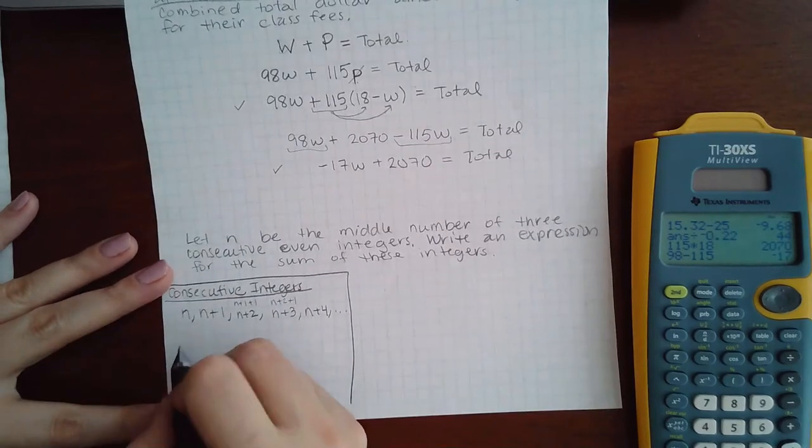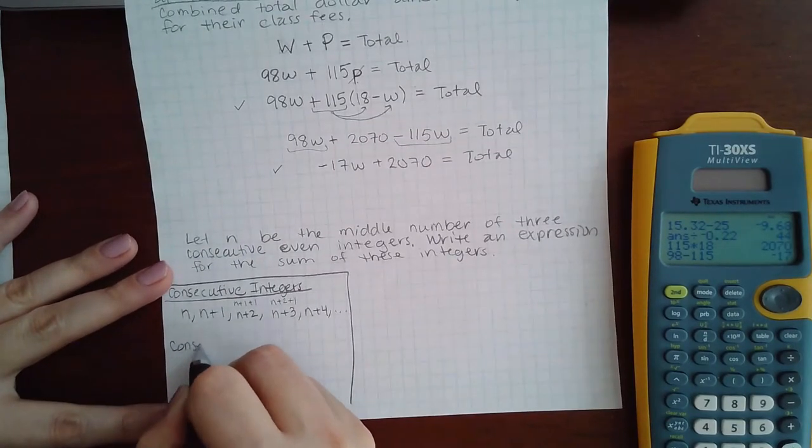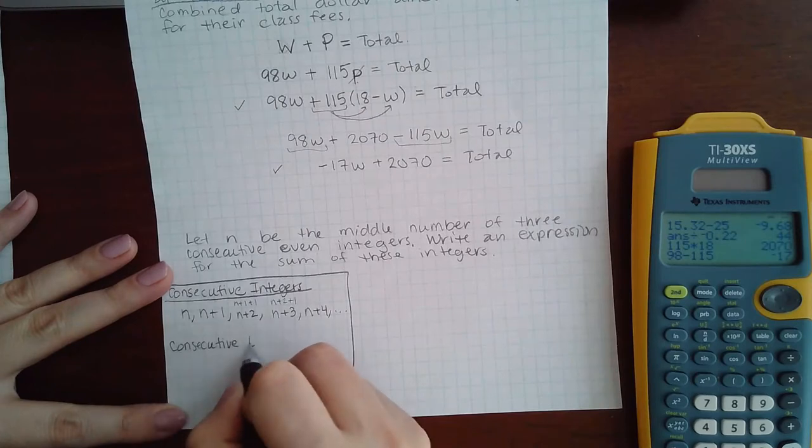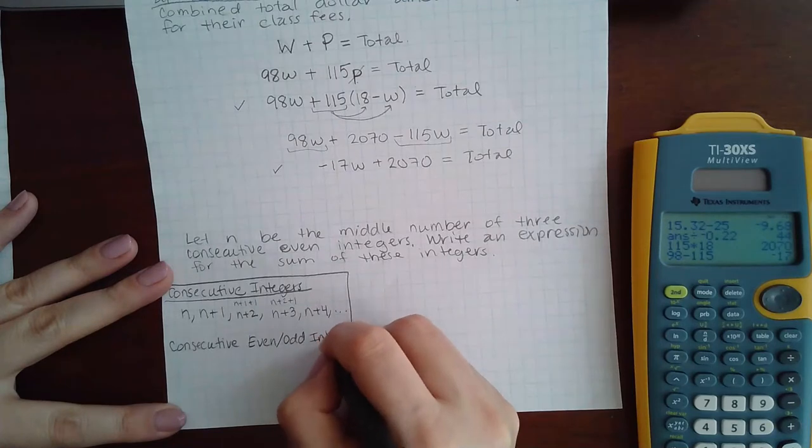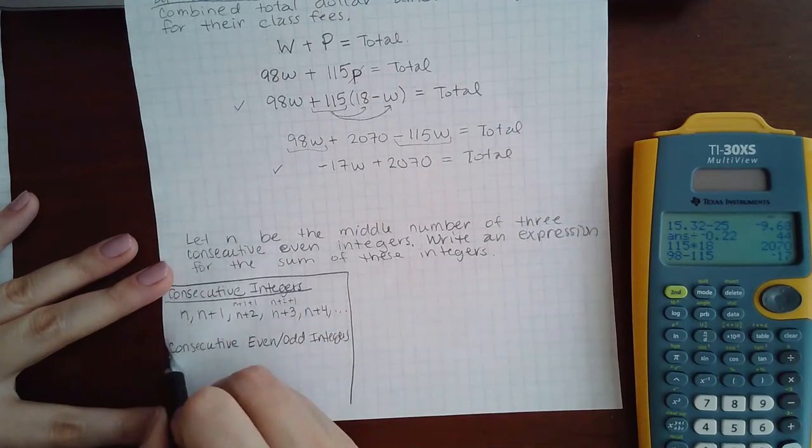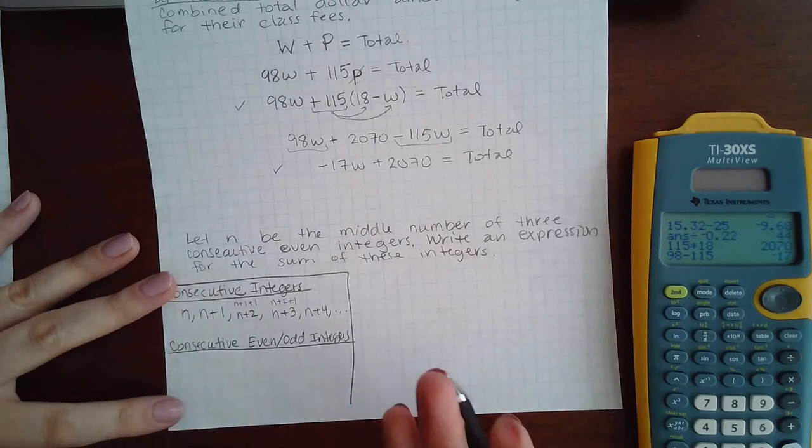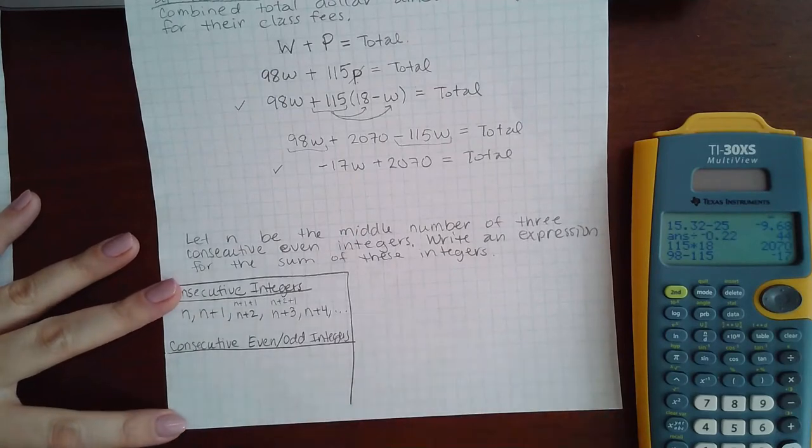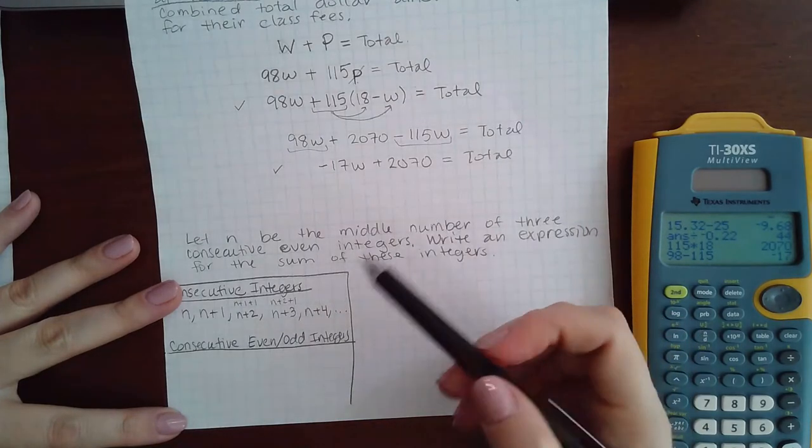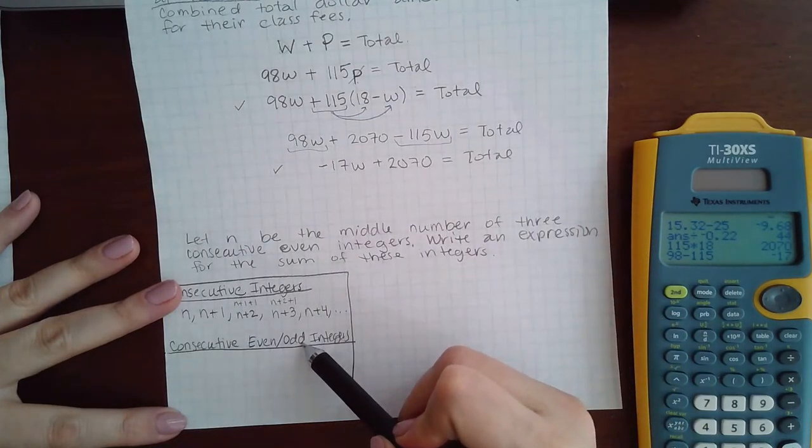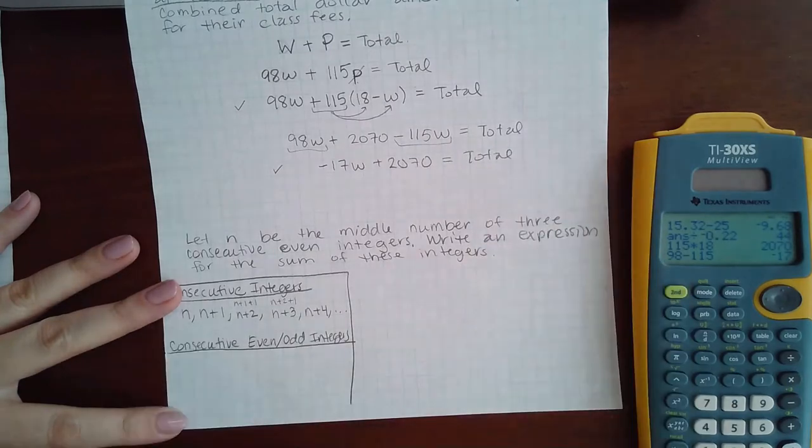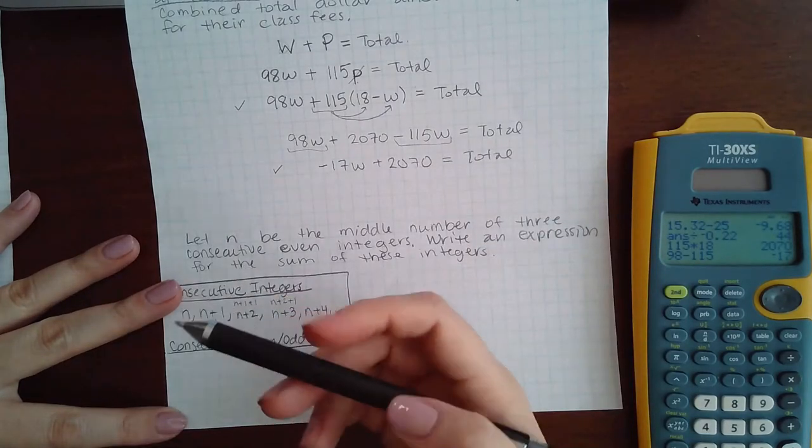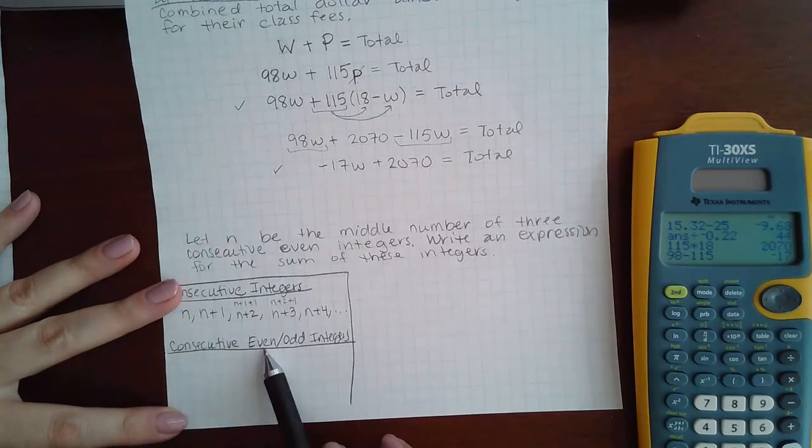When you do consecutive even or odd integers, it's like you're opening the book but you're only looking at the front side of the pages or you're only looking at the back side of the pages. If you're only looking at the front side and it starts with page one, then all the front sides are going to be the odd numbers. If you're looking at the back of the pages, that would start with page two, so then you'd be looking at all the even pages.